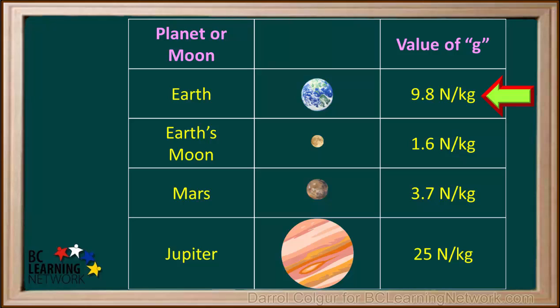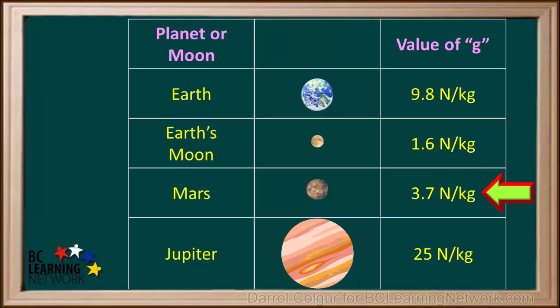The values of the acceleration of gravity g are different for the moon and other planets. This table shows that the value of g for Earth is 9.8, for the Moon it's 1.6, for Mars it's 3.7, and for Jupiter it's 25.